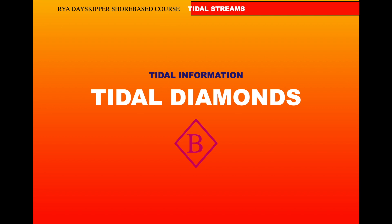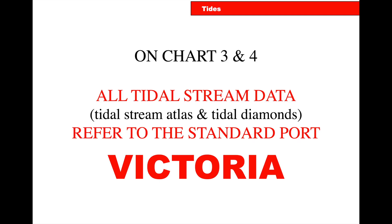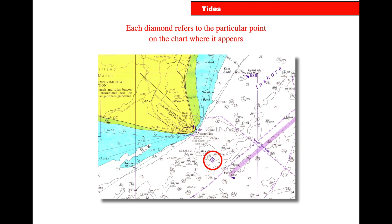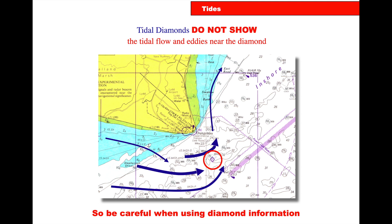Tidal diamonds: if we don't have a tidal stream atlas, we may use a tidal diamond. All tidal diamonds are referenced to the standard port Victoria for the RYA exercises. If we look at a tidal diamond, there's one just off Dungeness marked with the letter E. It doesn't show tidal flow and eddies near the diamond — it tells you what's happening with the tide at the diamond itself. This information comes from a data buoy that records the tide over a long time, giving data at that pinpoint position, so it doesn't account for tidal flow and eddies nearby.